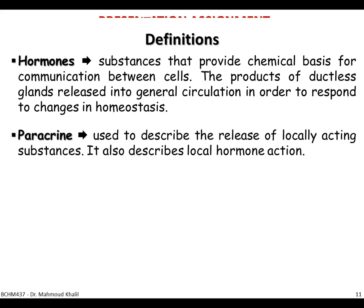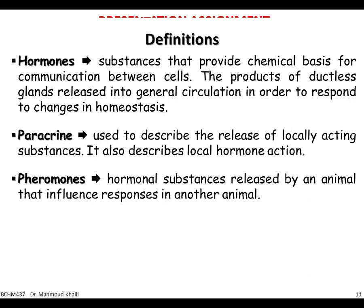Paracrine secretion describes the release of locally acting substances — a hormone secreted from a cell that affects neighboring cells, not distant target cells. This is usually described as local hormone action. Pheromones are like hormones, but they are hormonal substances released by one animal that influence a response in another animal.